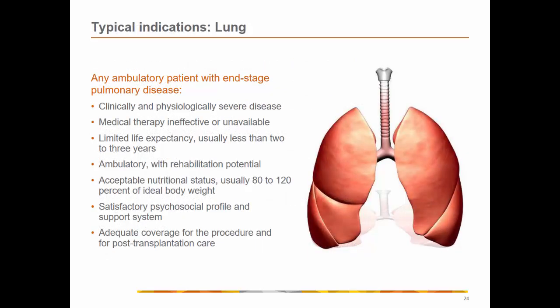Lung transplantation is an option for any ambulatory patient with end-stage pulmonary disease and for patients who have respiratory failure and remain at risk of death despite optimal medical treatment. The most common indications are COPD, idiopathic pulmonary fibrosis, cystic fibrosis, advanced alpha-1 antitrypsin deficiency, and primary pulmonary hypertension not secondary to heart disease. Less common indications include sarcoidosis, bronchiectasis, and congenital heart disease.